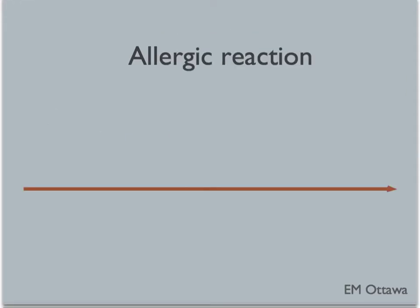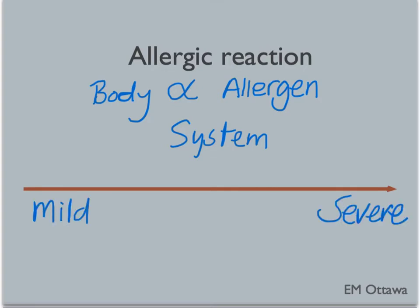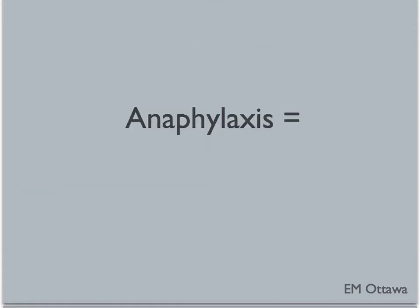Allergic reaction occurs when the body reacts to a previously sensitized allergen. It can occur in different body systems and can range from mild to severe. The worst form of allergic reaction is anaphylaxis, in which multiple systems are involved. Anaphylaxis is a medical emergency.